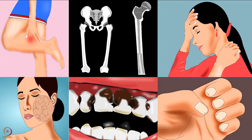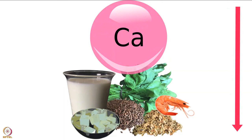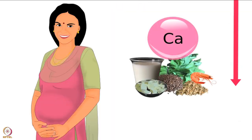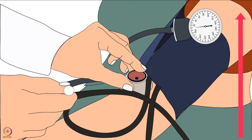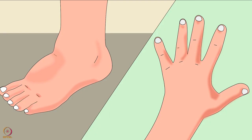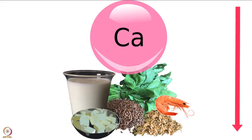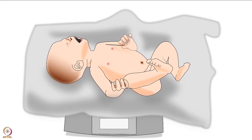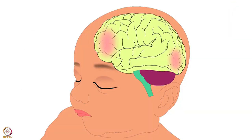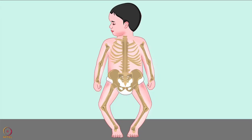Deficiency of calcium during pregnancy can result in a rise in blood pressure, swelling in hands and feet. Inadequate calcium intake by mothers may affect the baby — their birth weight may be low, growth can be retarded, and their physical and cognitive development can be damaged. In children, calcium deficiency can cause rickets.